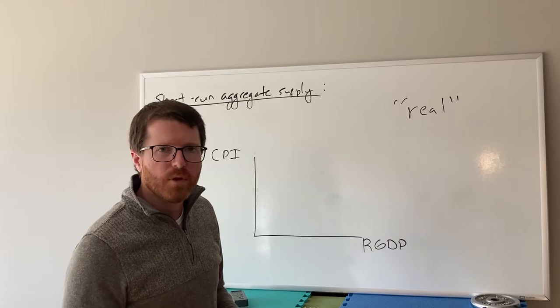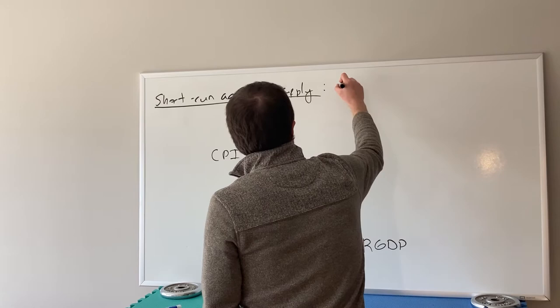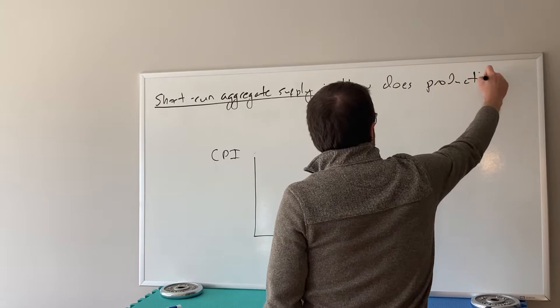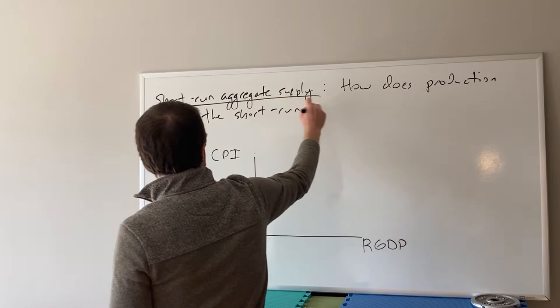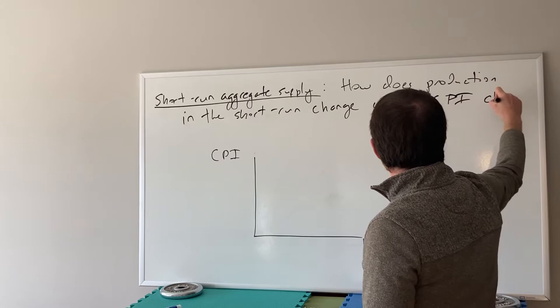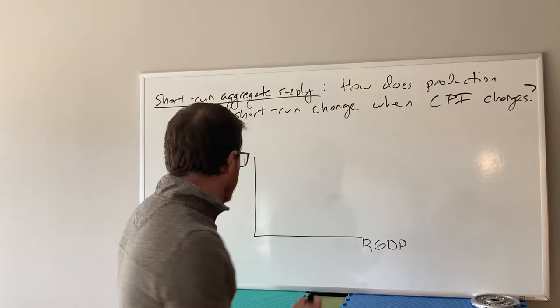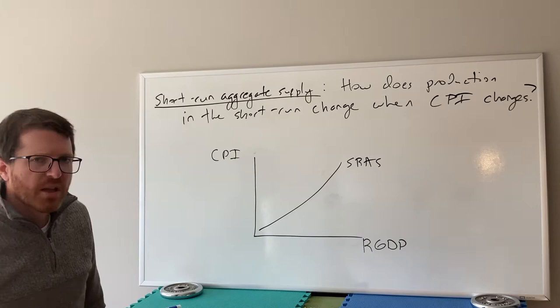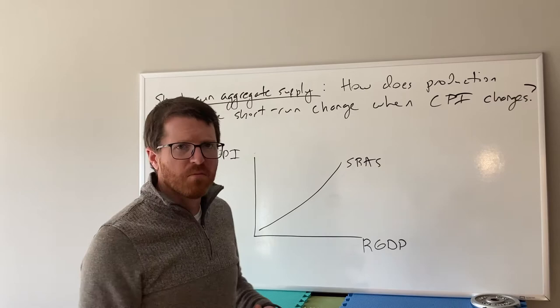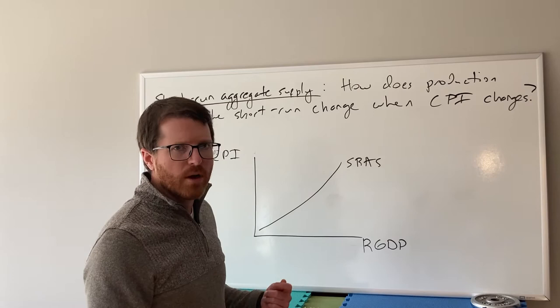Short-run aggregate supply thinks about how production in the short run changes when CPI changes — that's ultimately what it's trying to ask. There are a lot of different ways to think about how this would look, but we believe it generally looks upward sloping. So short-run aggregate supply would look something like that. Now why would it look like that? This is different from regular supply, which just says that prices go up and you sell more. This is a bit more complicated, and there are a few different reasons why we believe it looks like this.